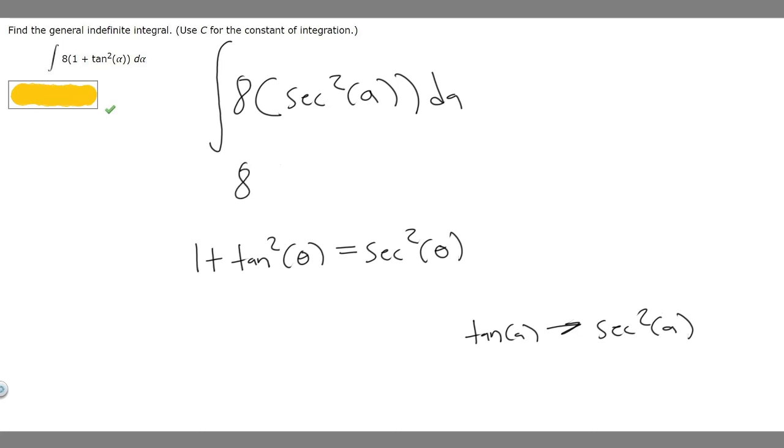It's basically just going to be 8, because we have the constant out front, multiplied by the antiderivative of secant squared of A, which is just tangent of A. So 8 times the tangent of A. And whenever we take an antiderivative, we have to add a constant, so plus C. The final answer is 8 times the tangent of A plus C.